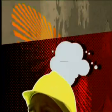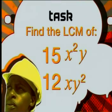So, now we've learned how to find the lowest common multiples of algebraic expressions. And now it's time for your task. Find the lowest common multiple of 15x²y and 12xy². Now that you know how to find the lowest common multiple, join me for the next lesson where we will learn to do this with algebraic expressions containing terms.